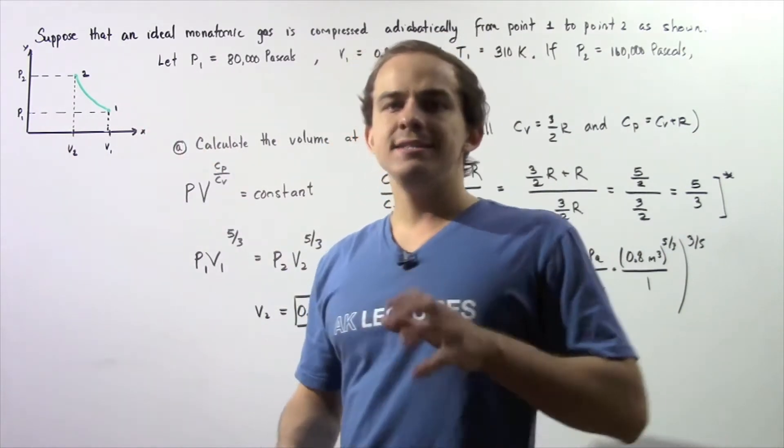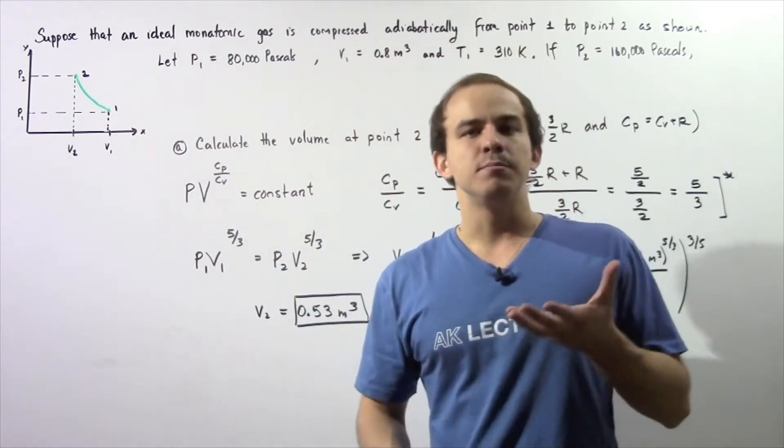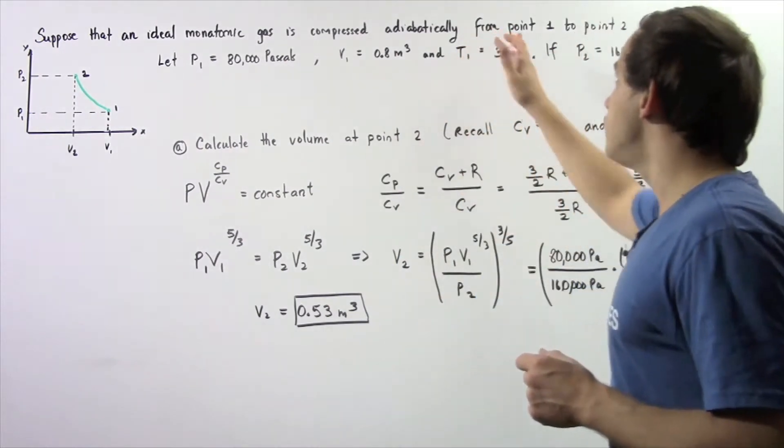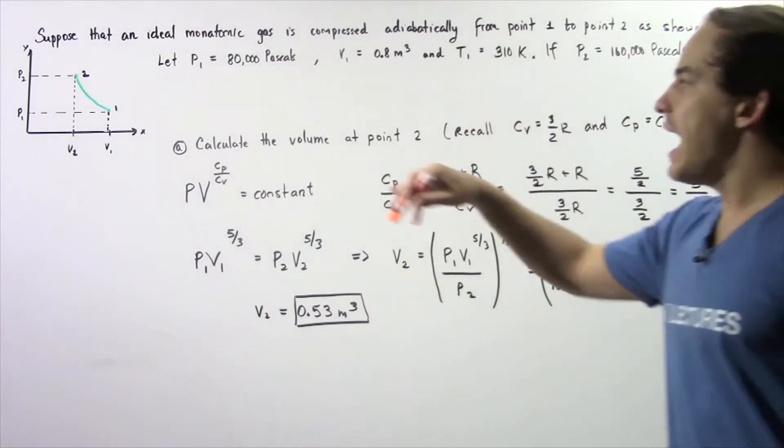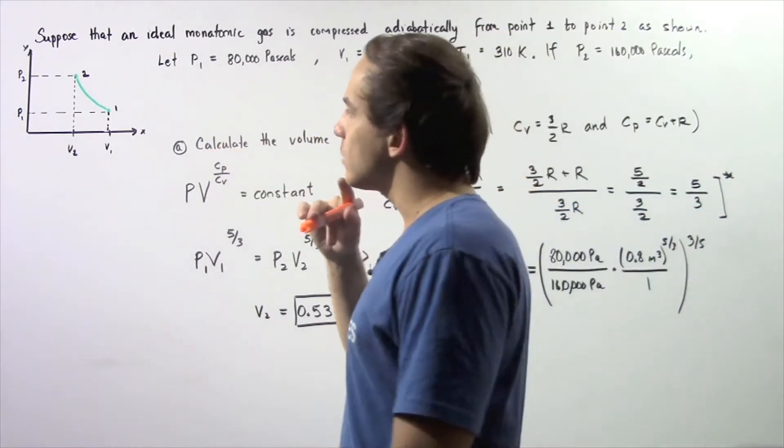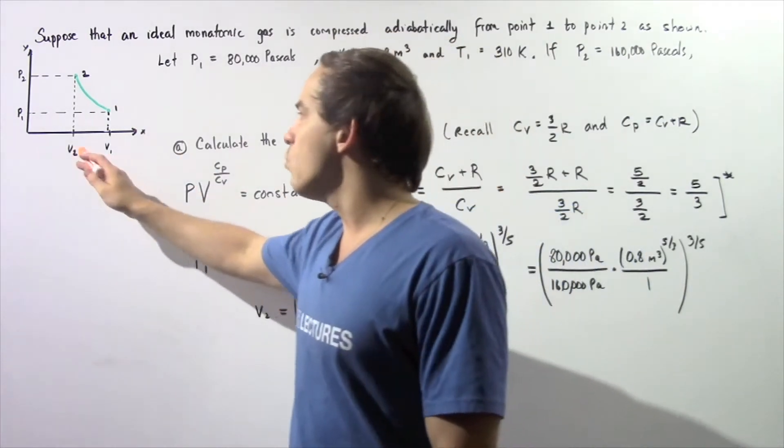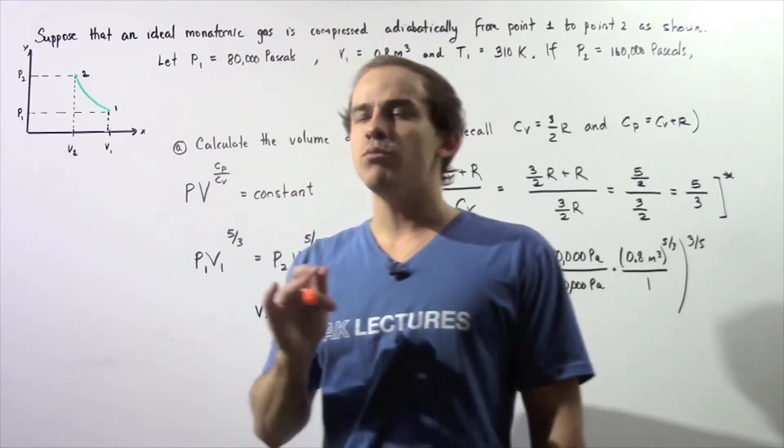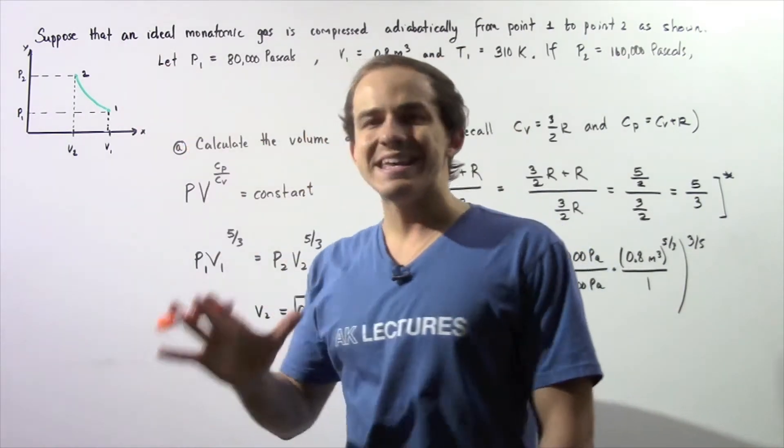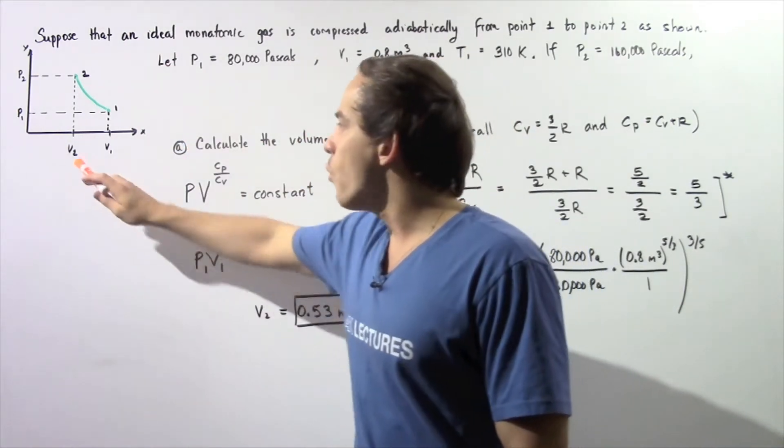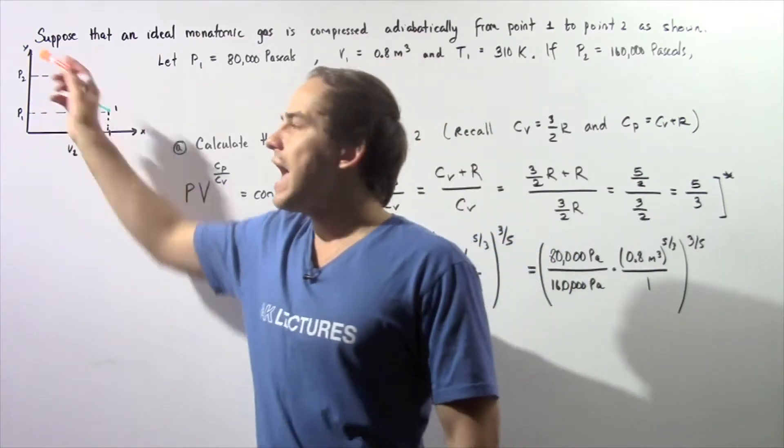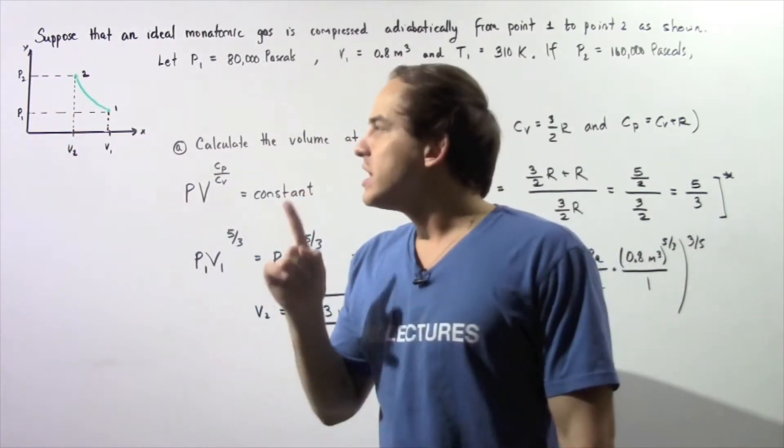Suppose that an ideal monatomic gas is compressed adiabatically and slowly from point 1 to point 2 as shown in the following diagram. We begin at point 1 where the volume is V1 and the pressure is P1, and we go to point 2 adiabatically and slowly where our volume is V2 and the pressure is P2.